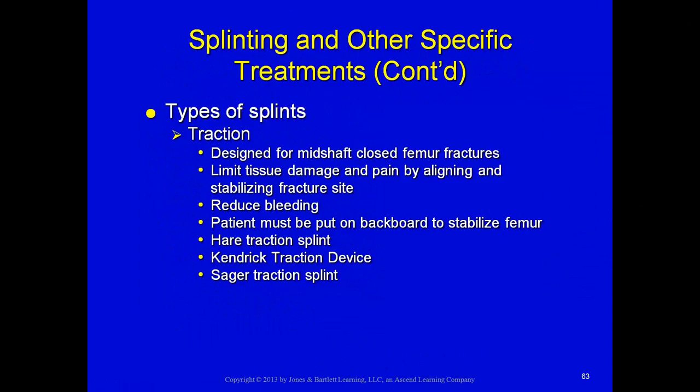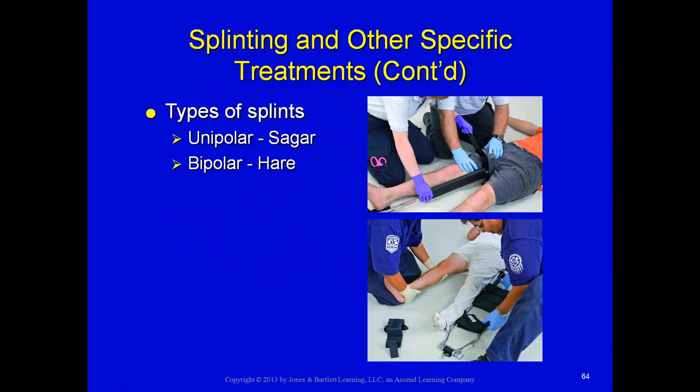Traction splints are designed for mid-shaft closed femur fractures. They limit tissue damage and pain by aligning and stabilizing the fracture site and help reduce bleeding. The patient must be on a backboard to stabilize the femur. Devices include the Hare traction splint, Kendrick traction device, and Sager traction splint. There are two types: unipolar — one pole, which is the Sager — and bipolar — two bars on either side of the leg, which is the Hare.